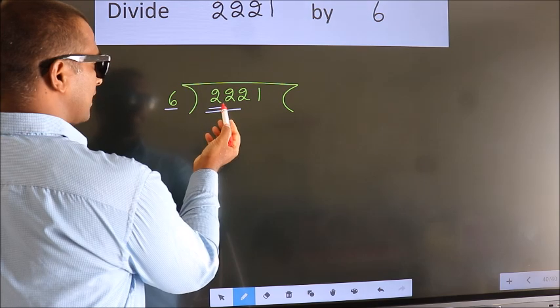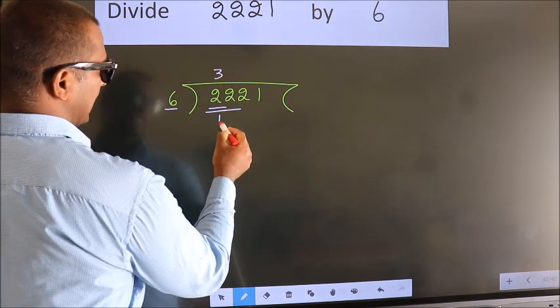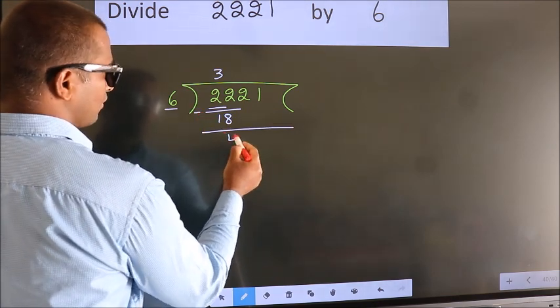A number close to 22 in 6 table is 6 threes, 18. Now we subtract. We get 4.